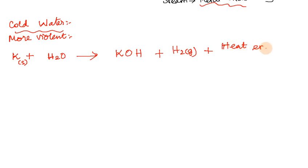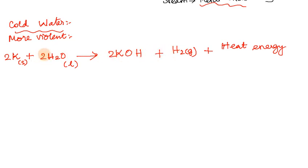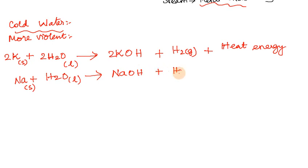The product is in liquid form. To balance the equation: hydrogen is 2, oxygen is 2. Sodium plus water reacts to form sodium hydroxide plus hydrogen gas — this is a violent, exothermic reaction releasing heat energy. To balance: sodium is 2, hydrogen becomes 4, oxygen is 2 — the equation is balanced.